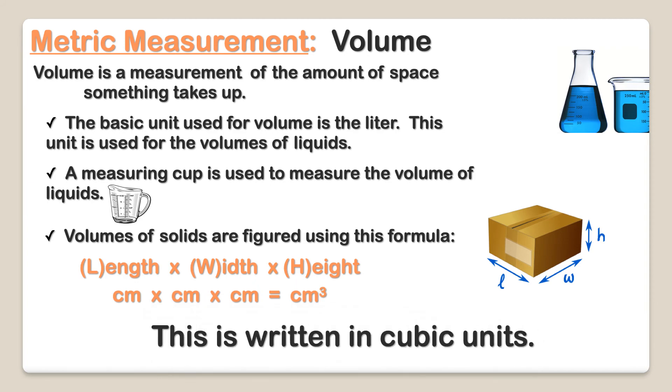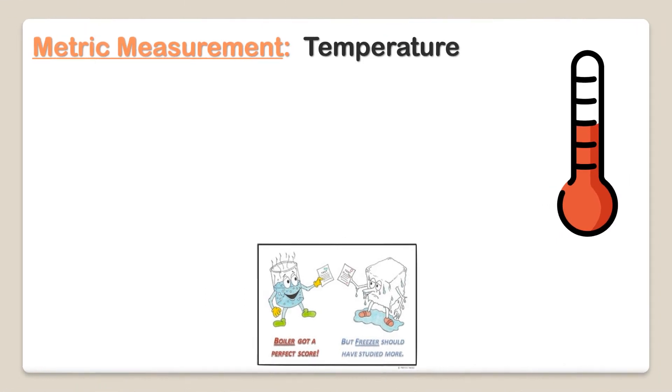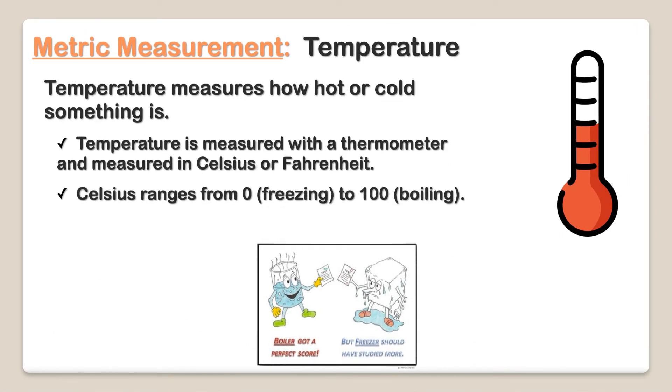Temperature measures how hot or cold something is. Temperature is measured with a thermometer and measured in Celsius or Fahrenheit. Celsius ranges from zero degrees, which is its freezing point, to 100 degrees, which is its boiling point. Water freezes on the Fahrenheit scale at 32 degrees and boils at 212 degrees.